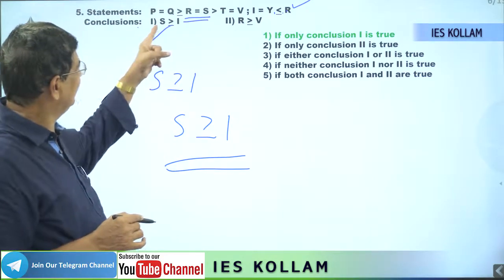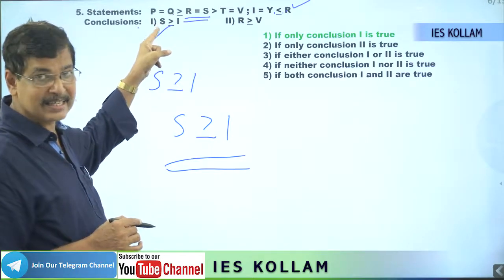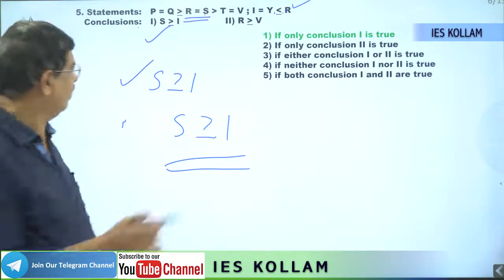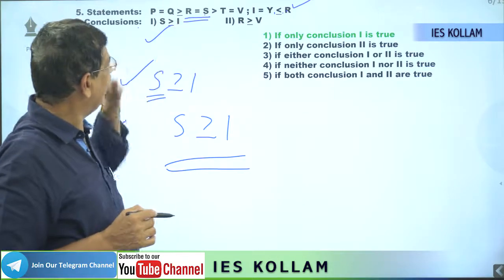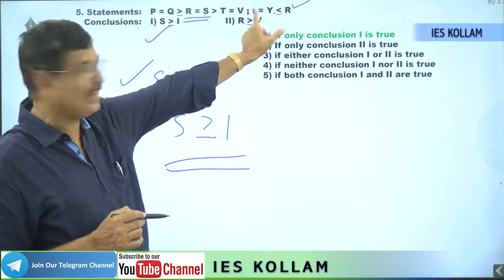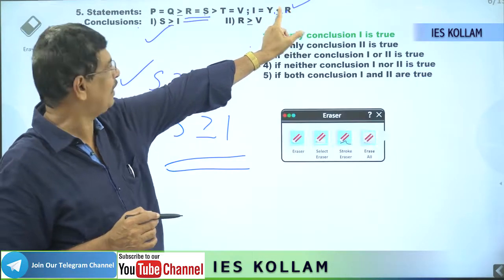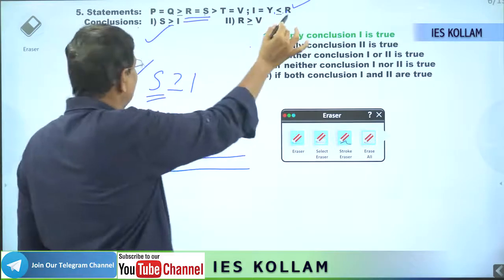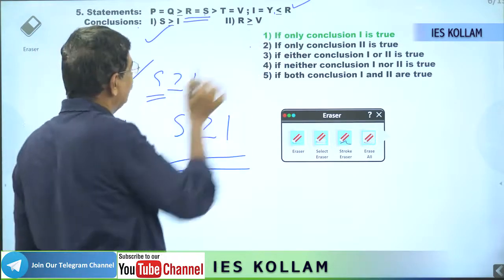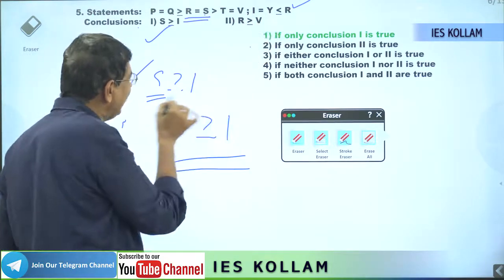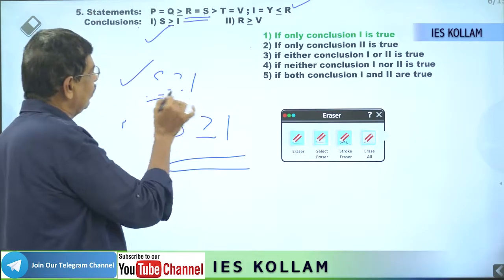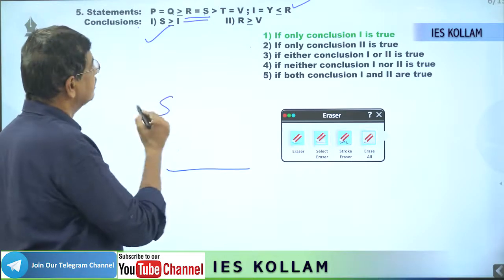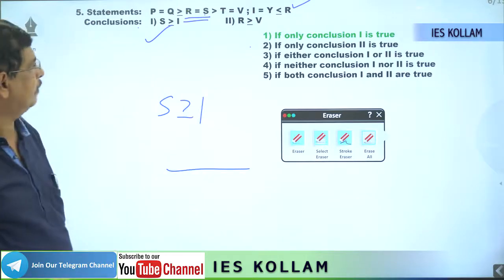Once again: we have to find the answer as S greater than or equal to I. The term having S is only here — S or R, either S or R we can take. Then for I: I or Y we can take anyone. I or Y, here also connecting with R. Therefore we are starting from here, taking R instead — R is less than or equal to, or greater than or equal to, I or Y. Since we need I: yes, S greater than or equal to I — the first conclusion is done.